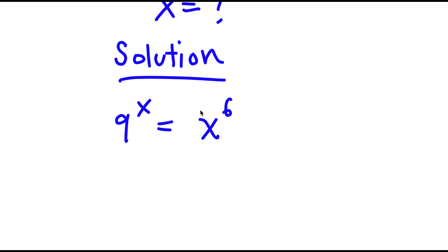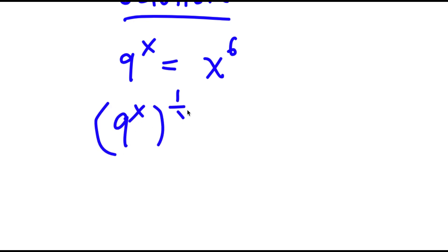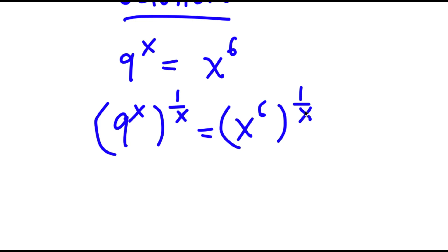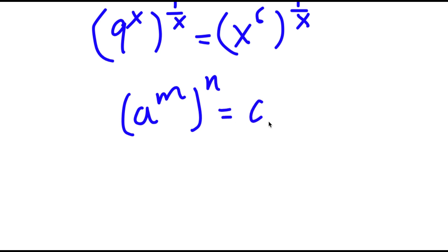I'm going to take the power of 1 over x on both sides. So now I have 9 to the power of x to the power of 1 over x is equal to x to the power of 6 to the power of 1 over x. Now if I have something in the form a to the power of m to the power of n, this is equal to a to the power of m times n.